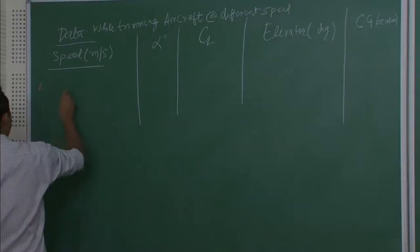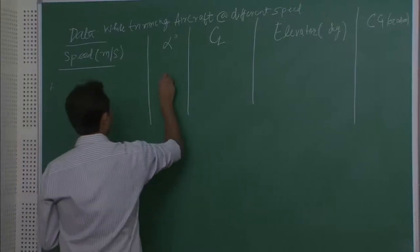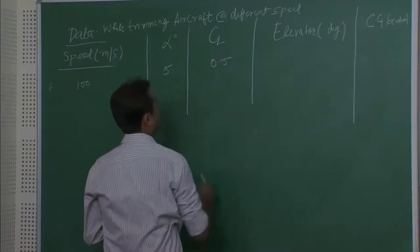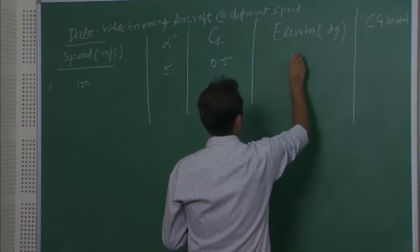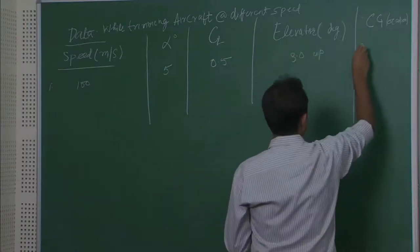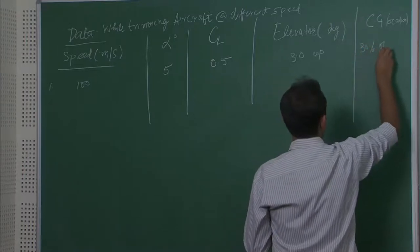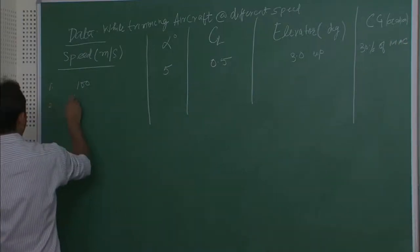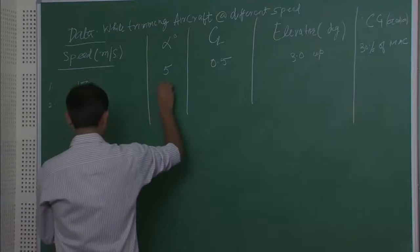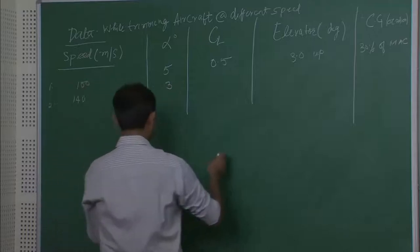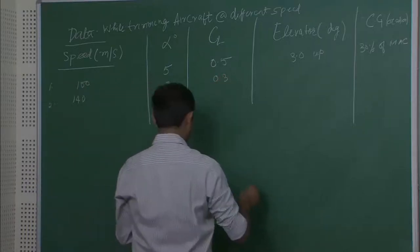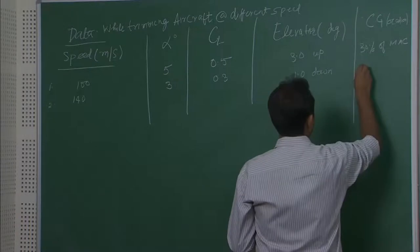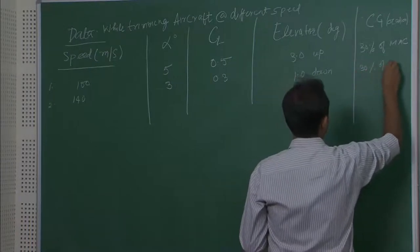The first set of data: speed 100 m/s, angle of attack 5°, CL = 0.5, elevator deflection 3° up, CG at 30% MAC. Second data: speed 140 m/s, angle of attack 4°, CL = 0.3, elevator deflection 1° down, CG at 30% MAC.